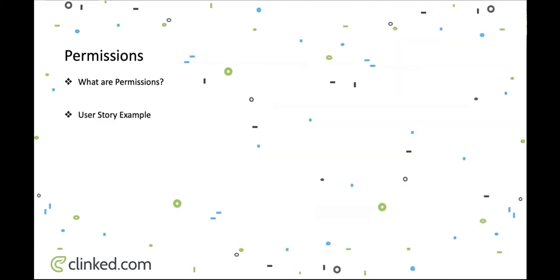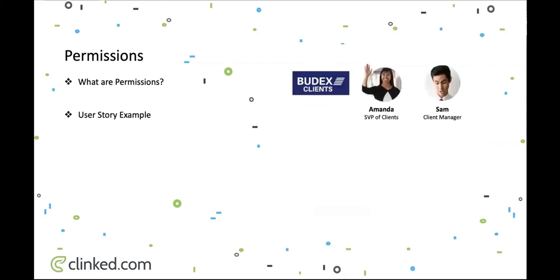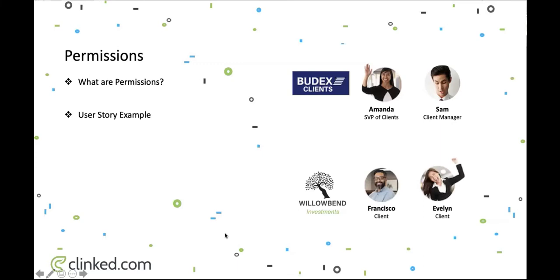Now we're going to look at the user stories. We've got Buttocks' clients — Amanda is a super admin of Clinked, responsible for setting up the general groups and accounts. Once she's set up her groups she'll hand it over to Sam who is the group admin. As group admin, Sam will be able to set permissions on any piece of content he has access to. Francisco is a content contributor so he will also be able to set permissions. However, Evelyn is set up as a read-only member, so she won't be able to set permissions because she can't create content — you need to be able to create content in order to edit permissions.